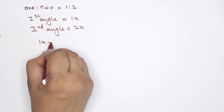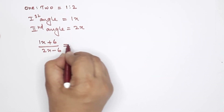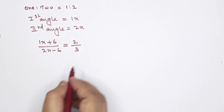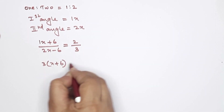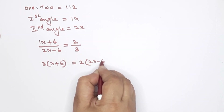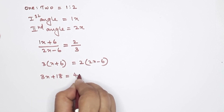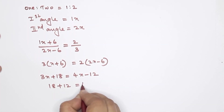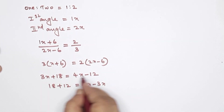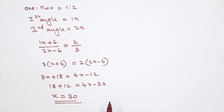The first angle increases by 6 degrees and the second angle decreases by 6 degrees. The new ratio becomes 2 is to 3. Setting up the equation: the first angle divided by the second gives 2 by 3.